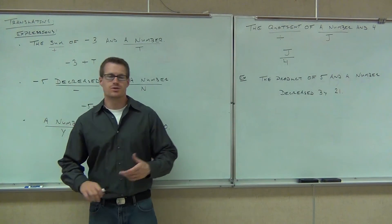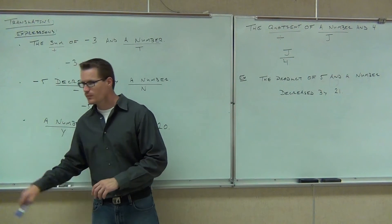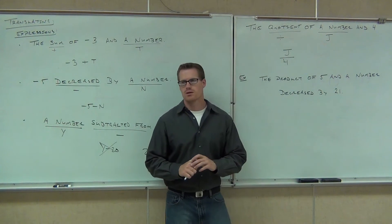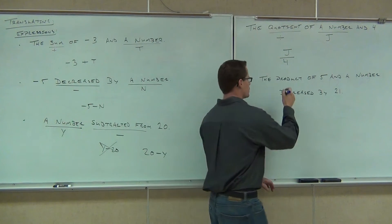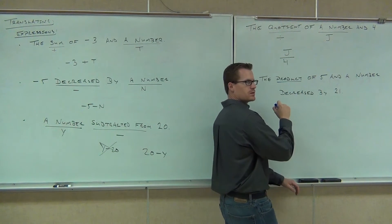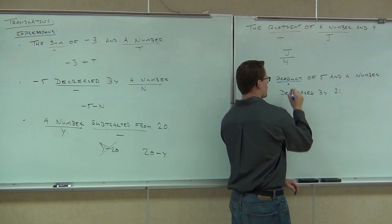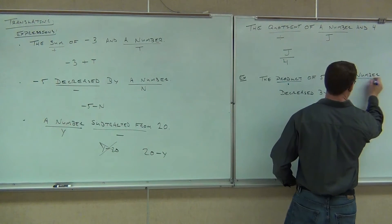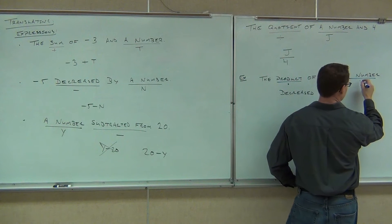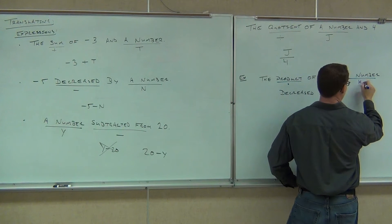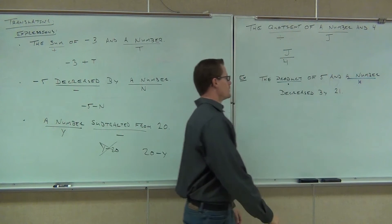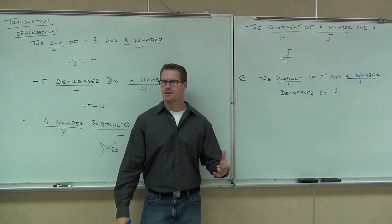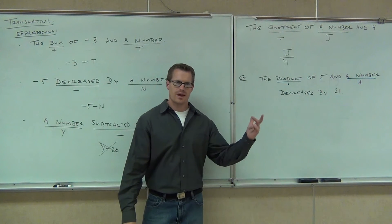We're going to go through the same process that we just finished. We're going to underline some key words here. What's the first key word I might want to underline? Product. What's product mean? The product of five, and I know a number could be anything. Let's pick H. Oh, okay, H would work. I don't really like picking S's because they look like fives for me. That's the only reason. So H would work for me.